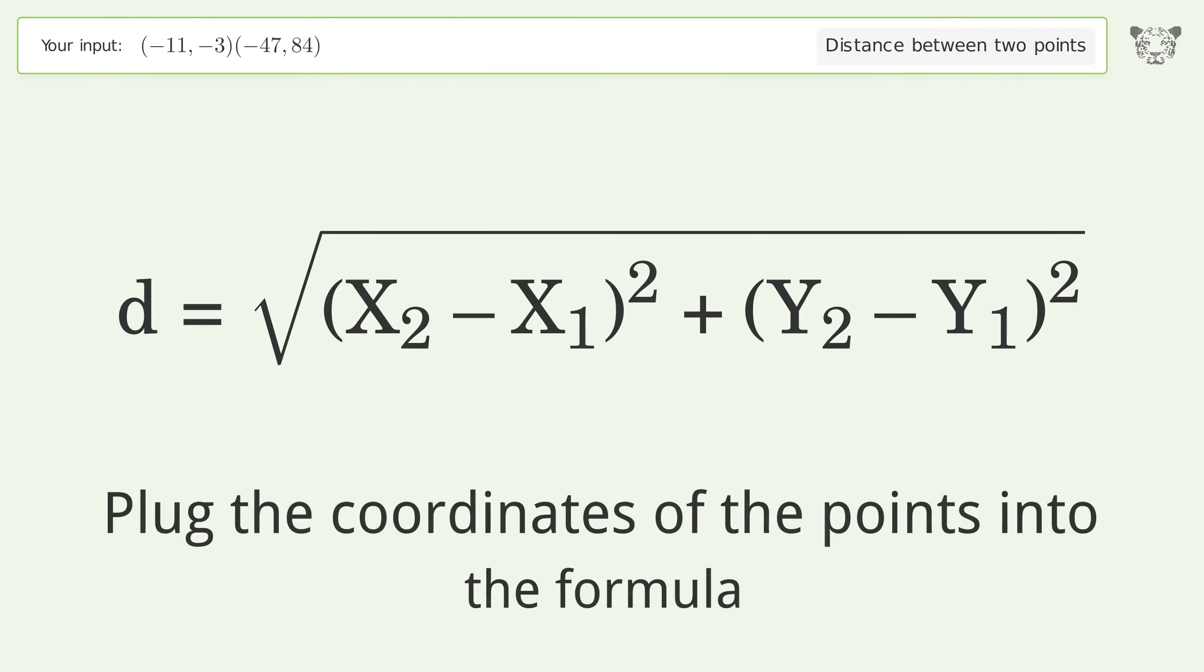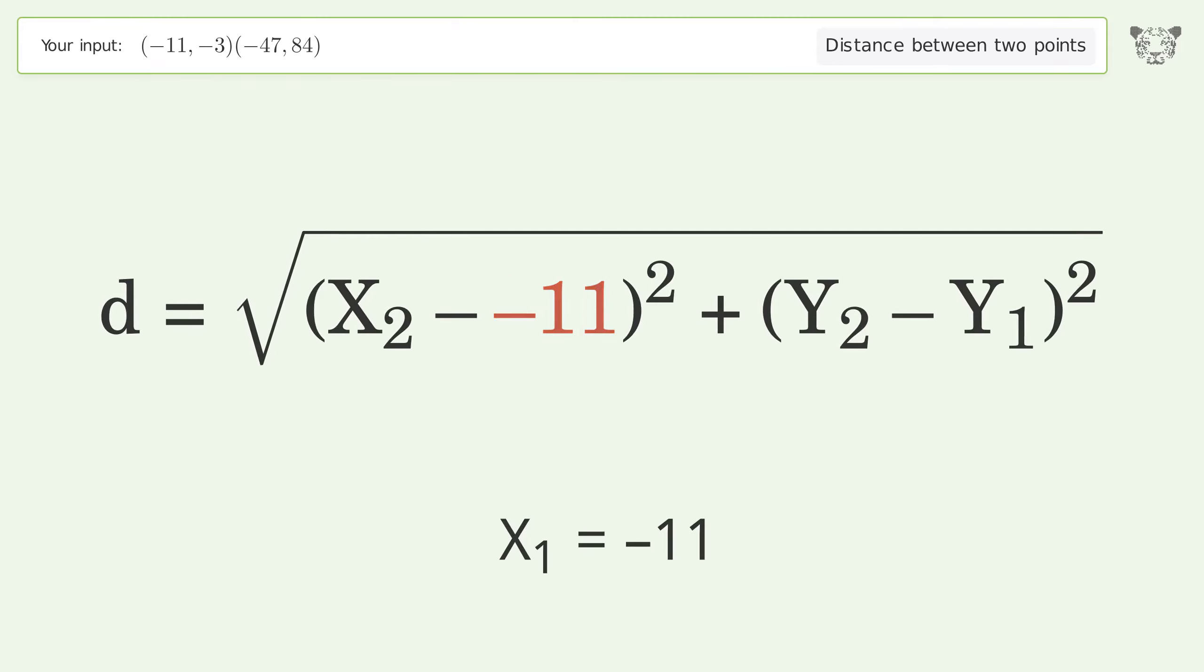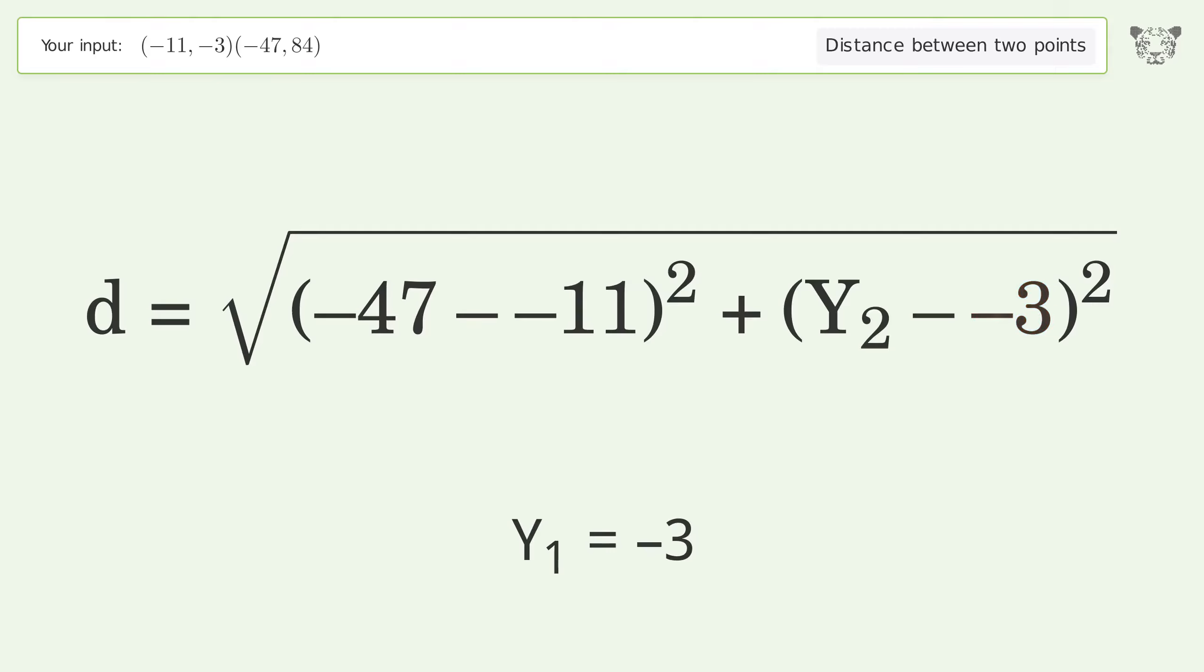Plug the coordinates of the points into the formula: x₁ equals negative 11, x₂ equals negative 47, y₁ equals negative 3, y₂ equals 84.